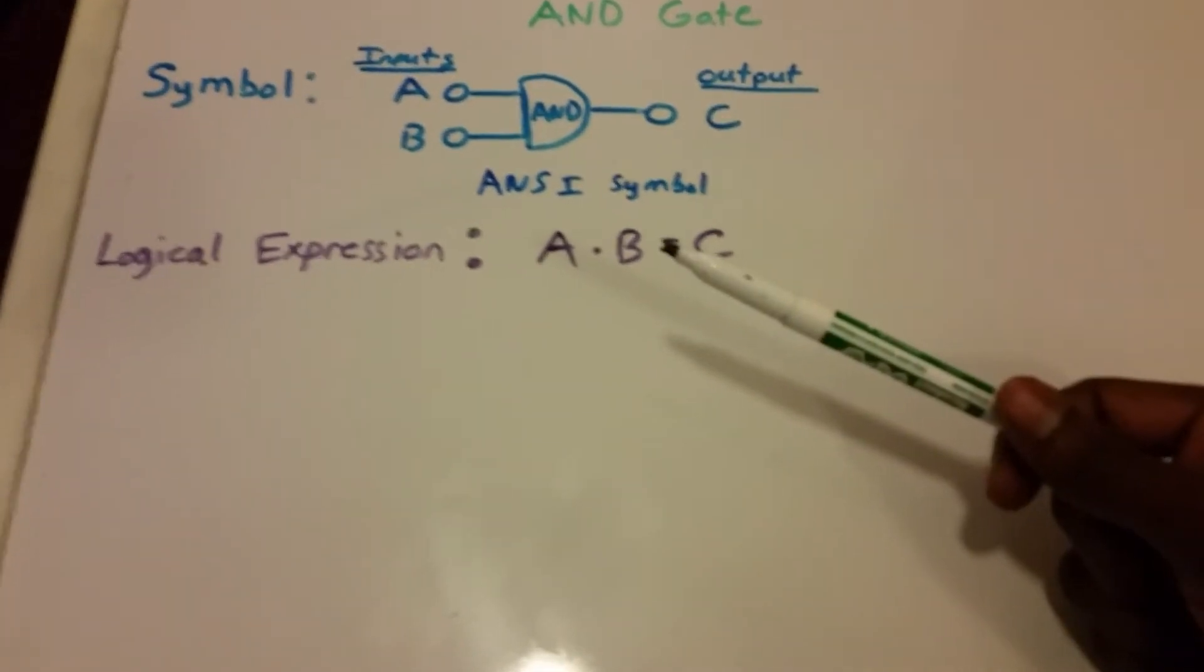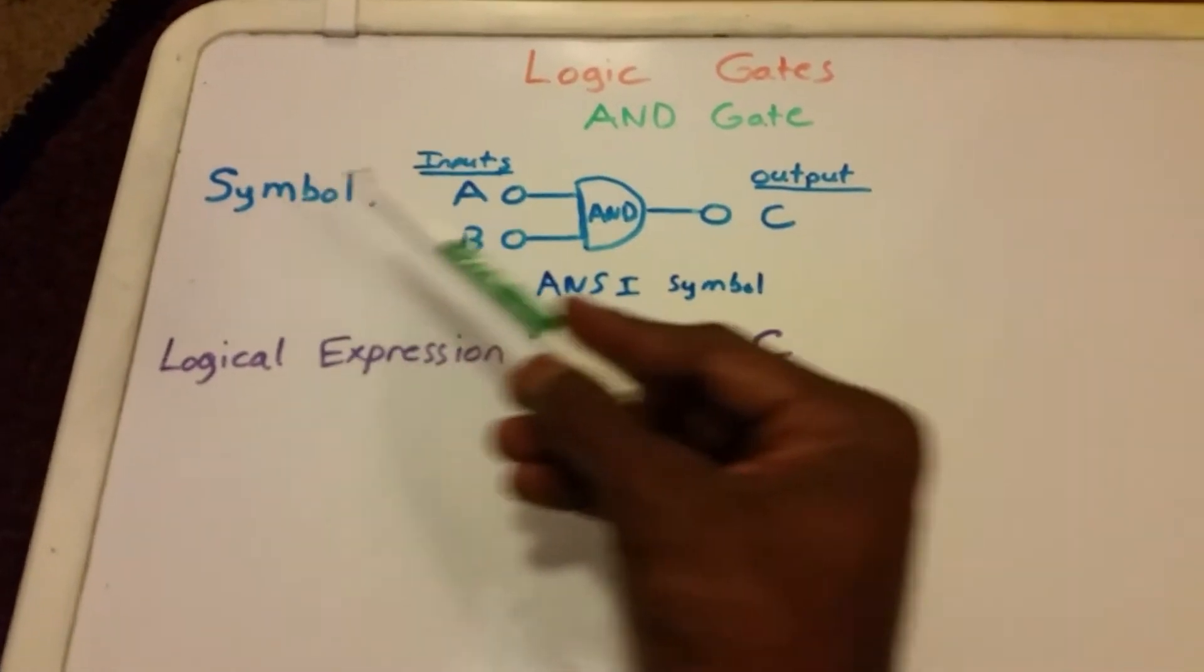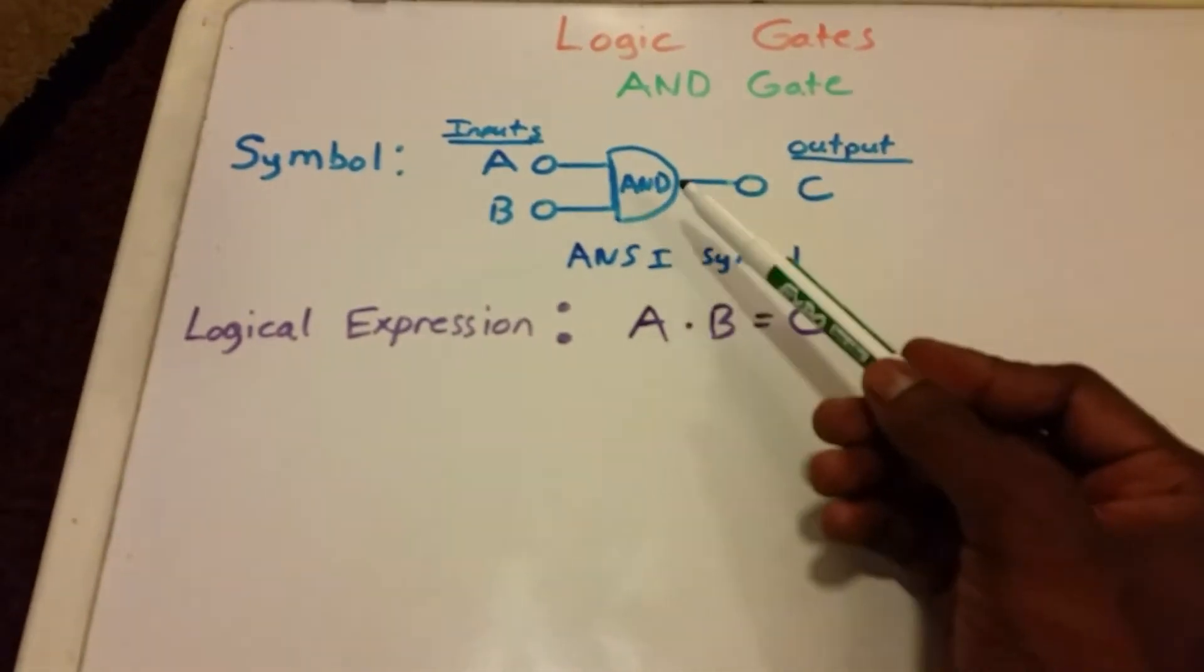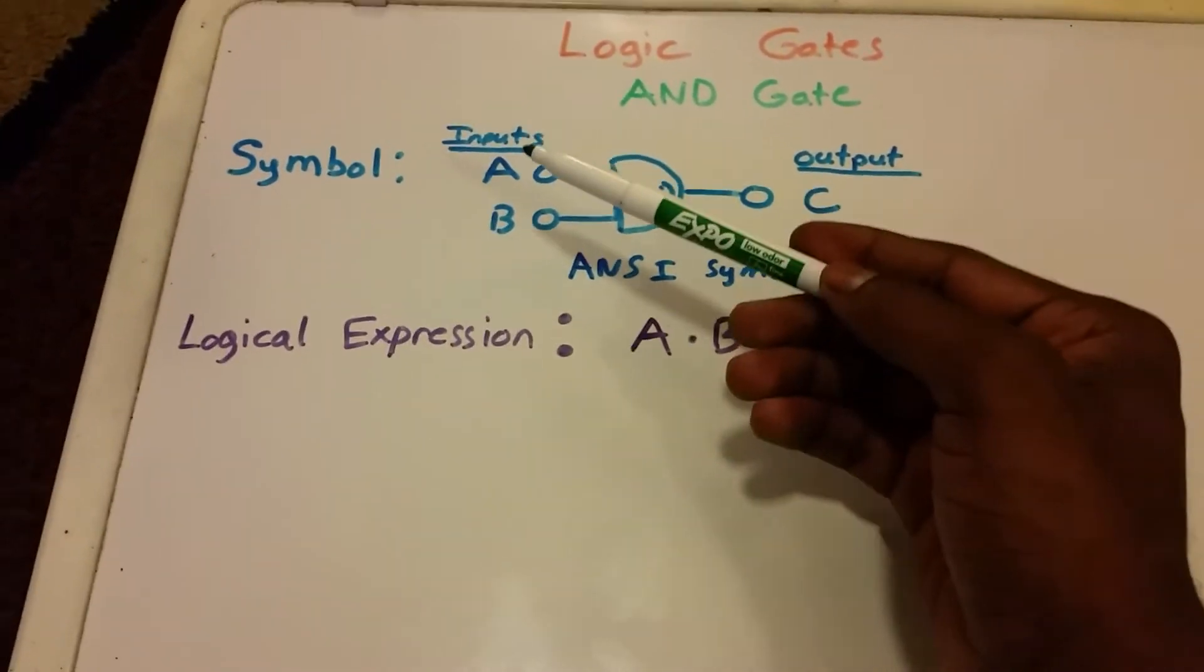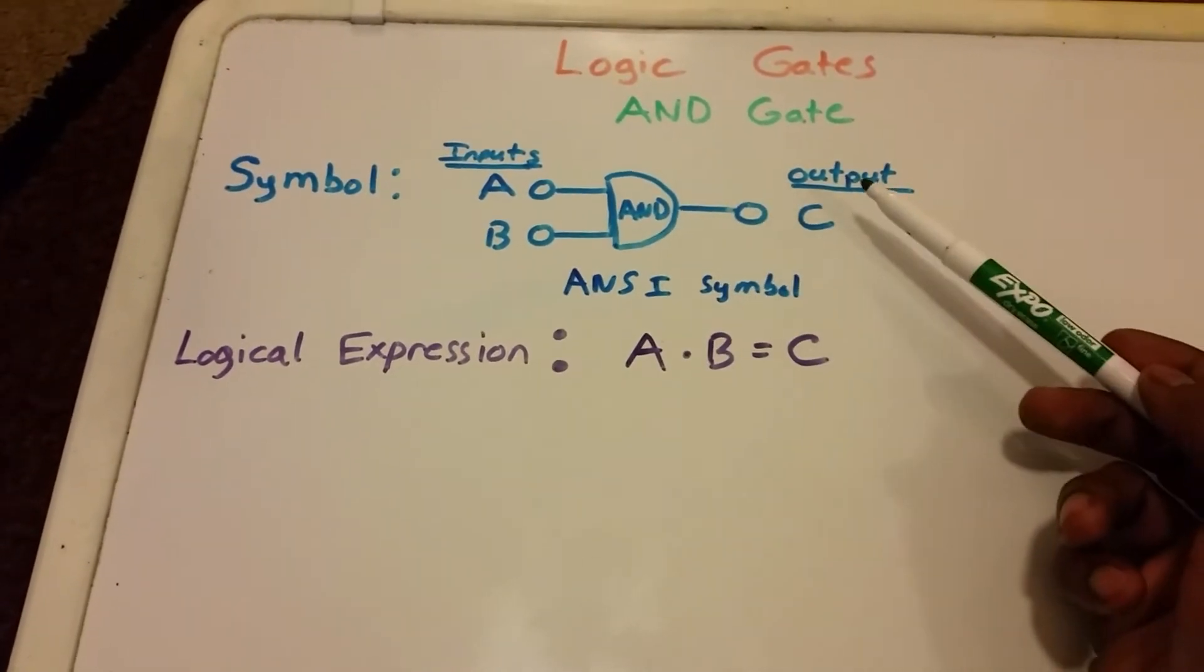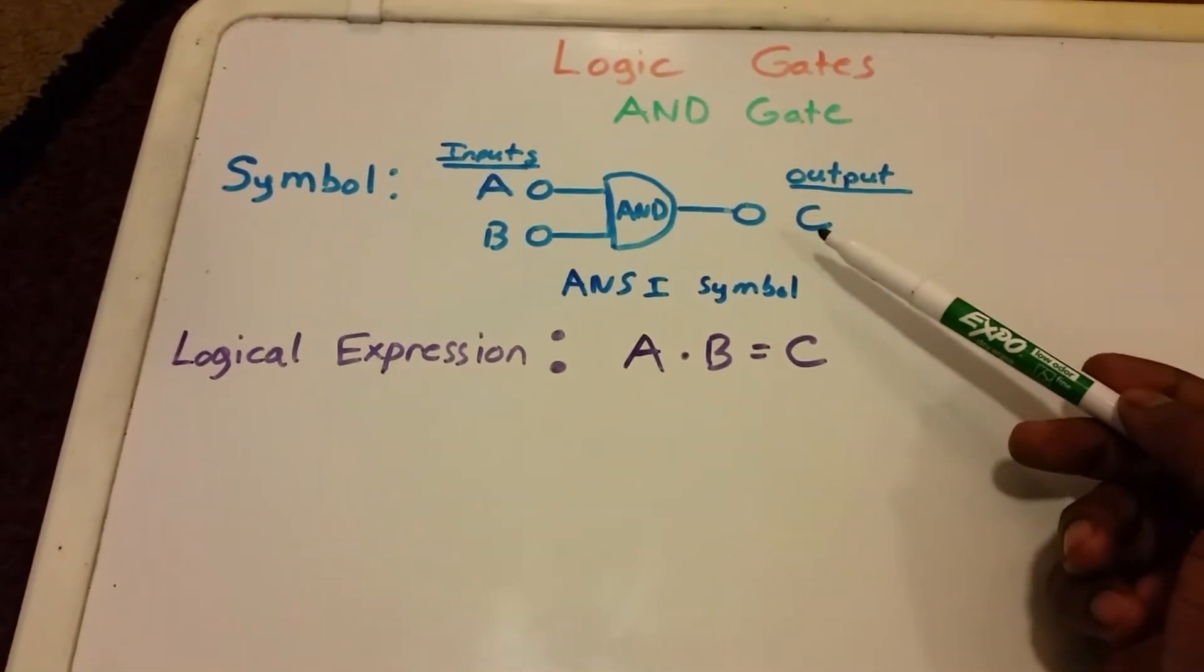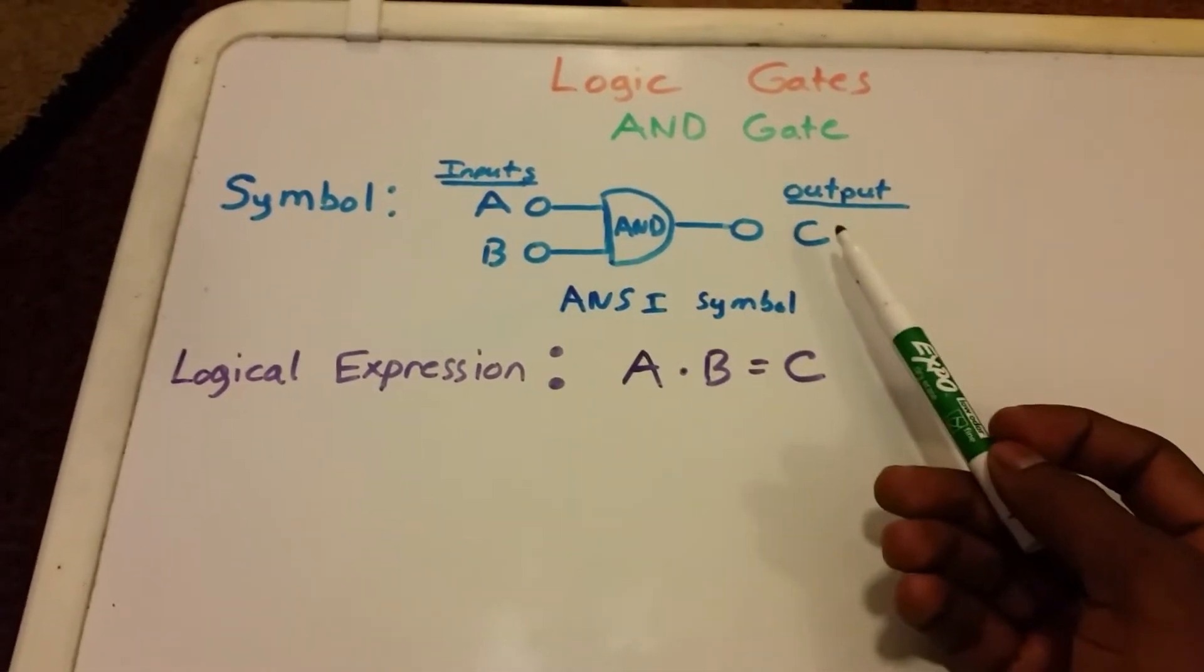This is an operation on two logical values. Here we have our AND gate—this is the symbol for the AND gate. It's the ANSI symbol, and you can see that we have two inputs here, input A and input B, and then we have our output, which is C.